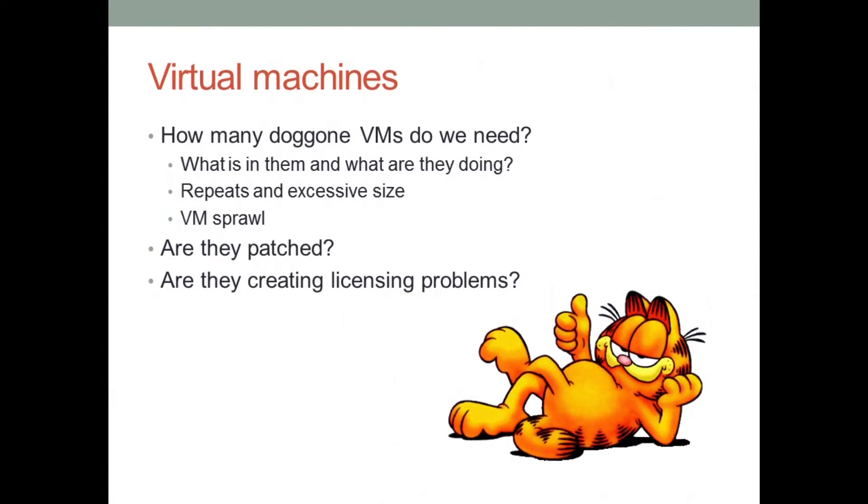We create virtual machines whenever and wherever we want without any real thought as to whether they should be created or how long they should live. We have to keep track of that — it's important to have a policy with regard to VM creation and management. On top of that, sometimes we add hypervisor chassis or put hypervisors in virtual machines, so we want to avoid the proliferation of not only VMs but also hypervisors themselves.